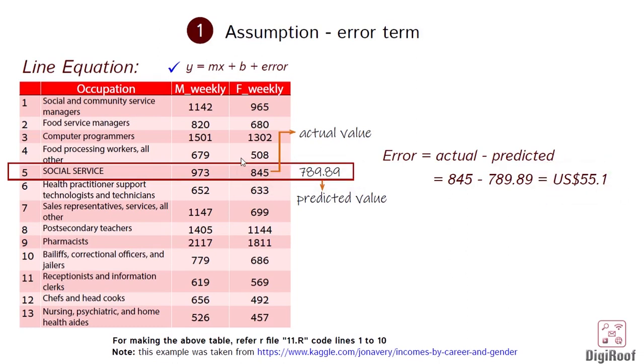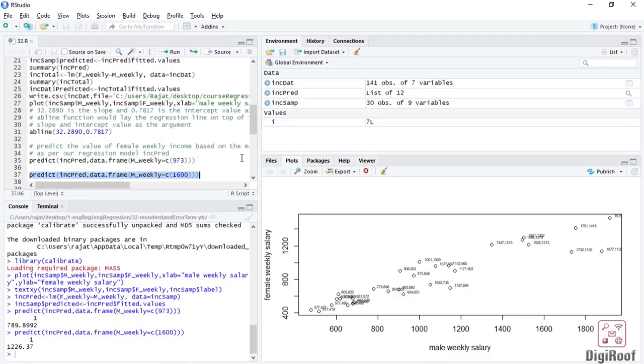Error is the difference between the actual response value and the value of the response as per the regression model. So for revision, if we were to now calculate the value of the response variable in the cement occupation, if the value of the predicted variable is US$1600, we would get US$1226 as the value of the response variable.